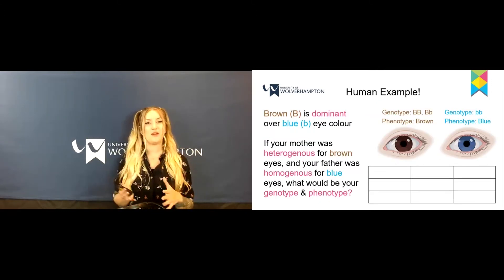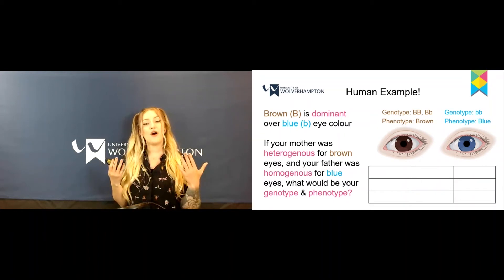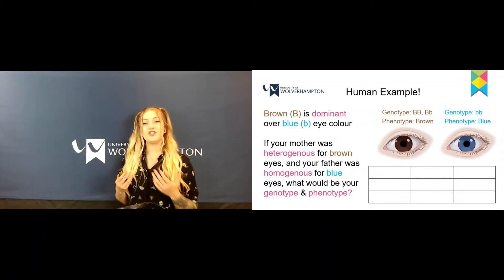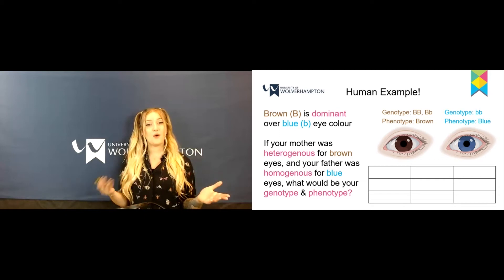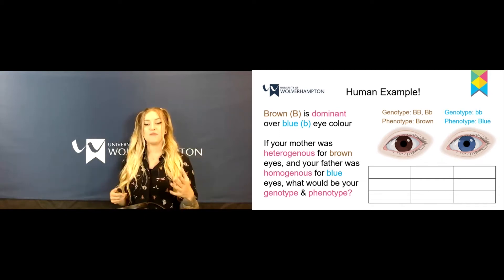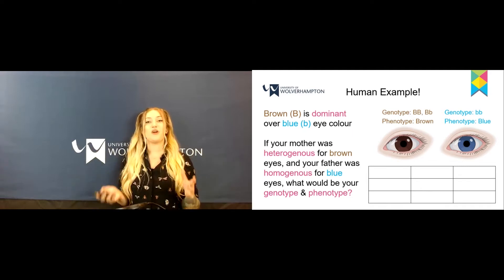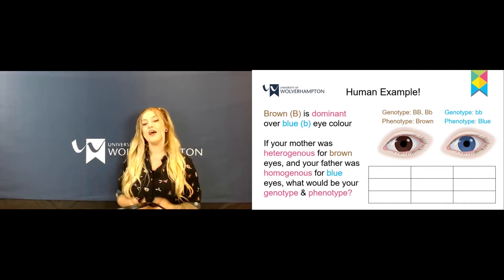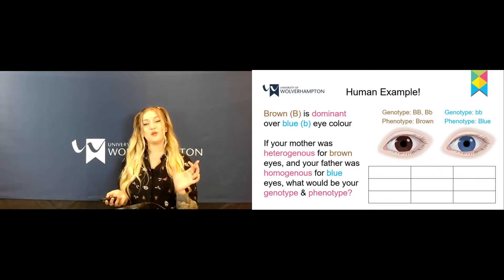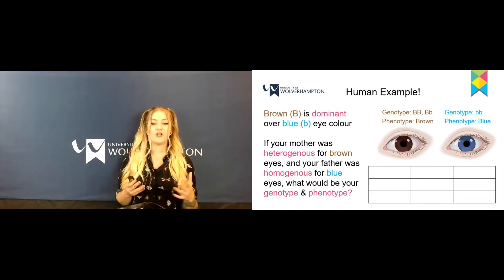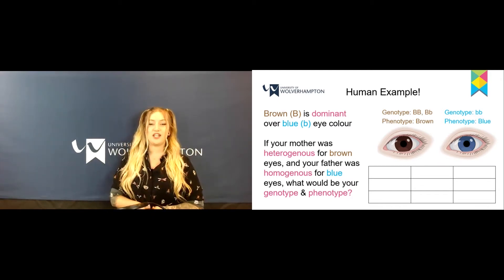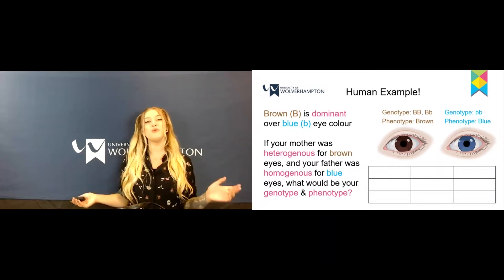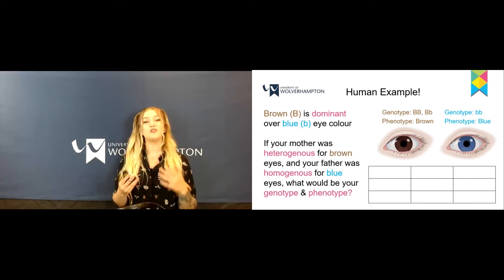So let's give you a human example. In humans, brown eye colour is dominant over blue eye colour. The genotype for brown eye colour can be two capital B's, or a capital B and a lowercase b. Whenever there is a capital in a genotype, that means it's going to have the dominant phenotype, whereas the genotype for blue eyes is a double lowercase b. So let's give you a small example to work through: if your mother was heterozygous for brown eyes and your father was homozygous for blue eyes, what would be your genotype and phenotype? You can pause this video here to have a think, and once you're done just press play for the answer.